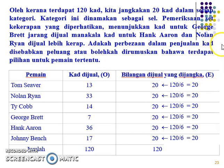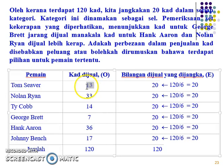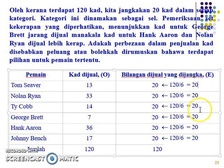We have two types: the equal (setara) and the not-equal one. Our observed values and our expected value is 20. How did I get 20? 120 divided by 6 equals 20, because we assume each cell will have the same proportionate number. So each expected value is 20, and the sum of everything is 120.